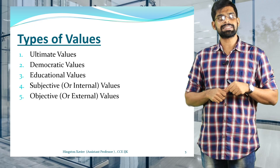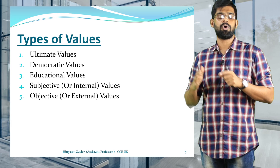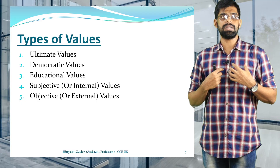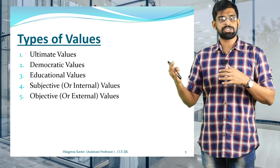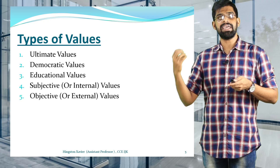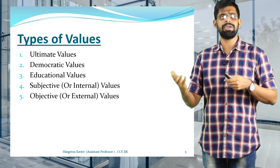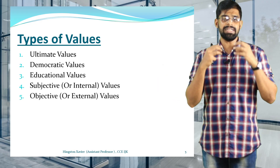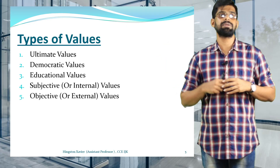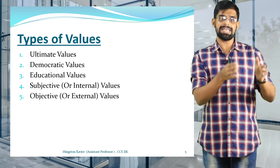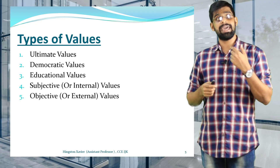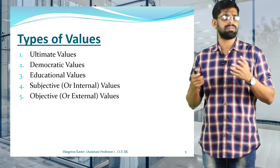The last type includes subjective or internal values and objective or external values. Internal values are those inculcated within oneself, not pressurized or imposed by an external force. External or objective values are those inculcated through external forces such as education, family, religion, or culture. It is because of internal values that each individual is different — person A's values are entirely different from person B's — while external values come from religious, cultural, and family factors.